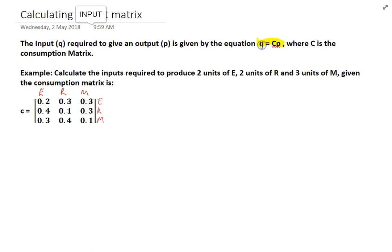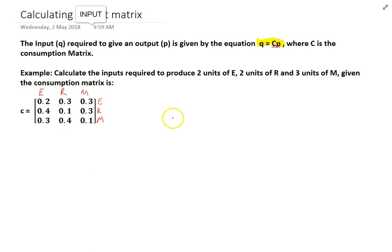Make sure you know that formula. Now, the example: calculate the inputs required to produce two units of energy, two units of raw materials, and three units of manufactured goods, given the consumption matrix provided.